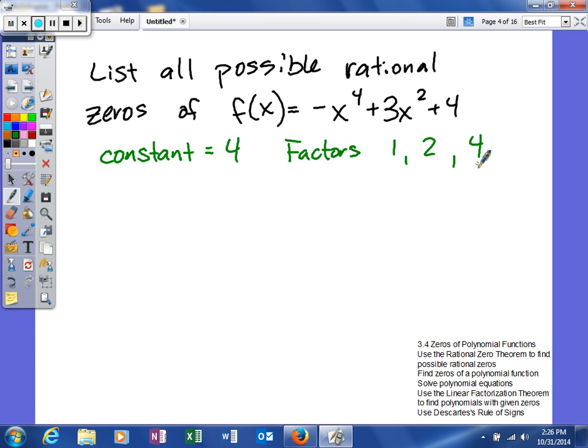Now, the crazy part is, these numbers could be positive or they could be negative. Then what we have to do is find the factors of the leading coefficient. Our leading coefficient in this problem is -1. Good news is the factors of -1, well, there's only 1. So, it's either plus or minus 1.